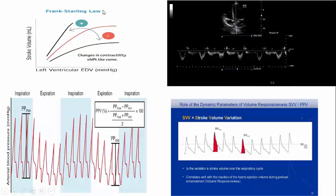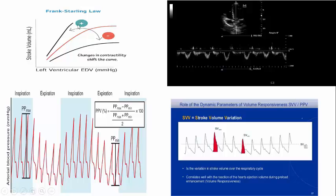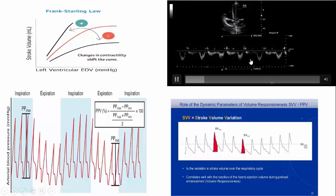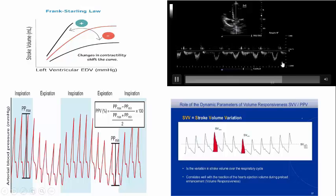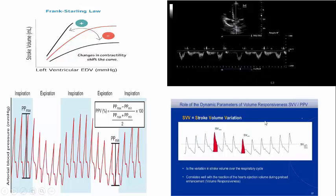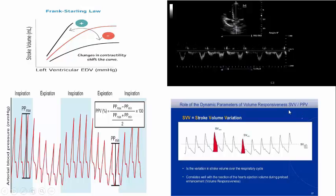As you see here on the left is the Frank-Starling curve, the famous Frank-Starling curve. Here is the LVOT VTI on a patient with controlled mechanical breath. Here is the stroke volume variability with mechanical breath, which some machines will clearly detect.